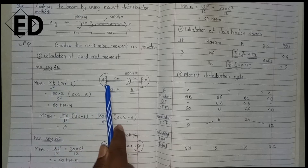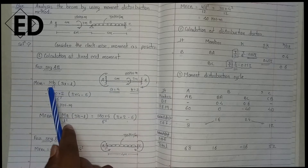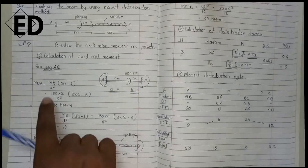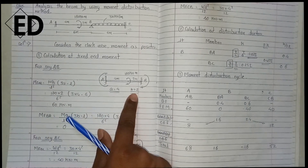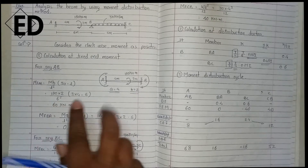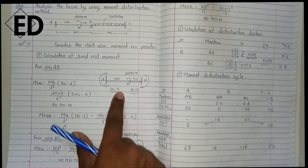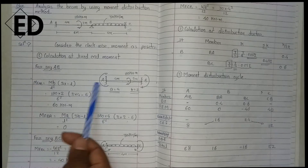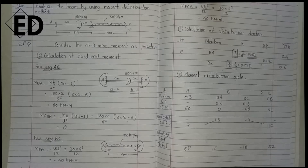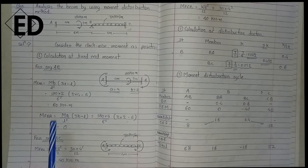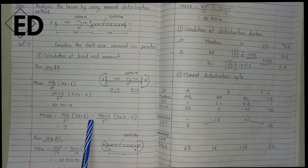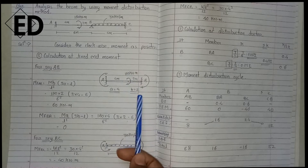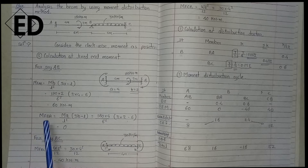For calculating the fixed end moment from A to B, using the formula directly: M = 180, b = 2, L = 6, and a = 4. So we get the fixed end moment from A to B as 60 kNm. Now calculating the fixed end moment from B to A using the formula MB/L² × (3b − L), and putting in the values, we get the fixed end moment from B to A equals 0. This completes span AB.